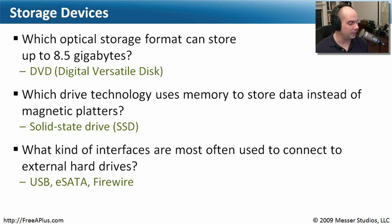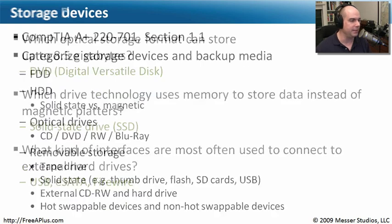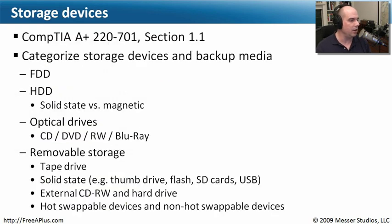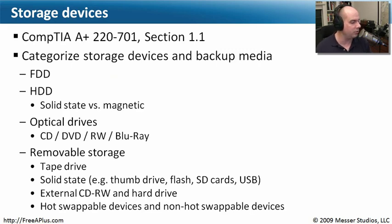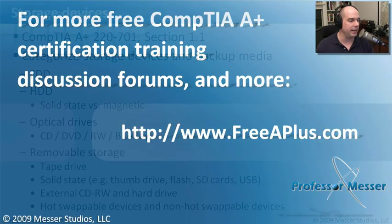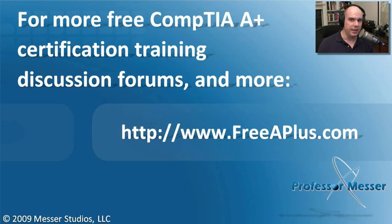Those are the ways we can connect external hard drives, and if you answered any of those you'll find a hard drive out there with some of those formats. That covers what we needed to know for our 220-701 requirements in Section 1.1, where we need to categorize storage devices and backup media. We went through floppy drives, hard drive types, optical drives, and finally removable storage. If you'd like to see more of our CompTIA A+ videos, you can participate in our message boards, leave a comment, or visit our website at prepplus.com.